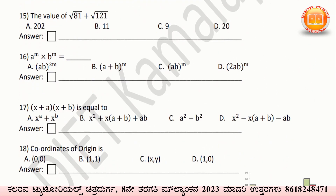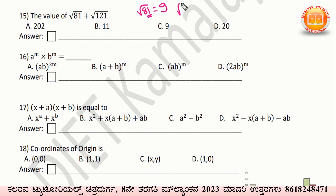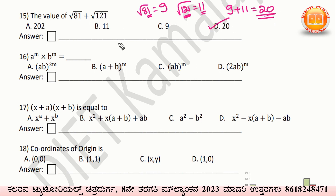15th question: square root of 81 plus square root of 121. Square root of 81 means 9² = 81, so the square root is 9. Square root of 121 means 11² = 121, so the square root is 11. Adding them: 9 plus 11 equals 20. Option D — 20 — is the correct answer.